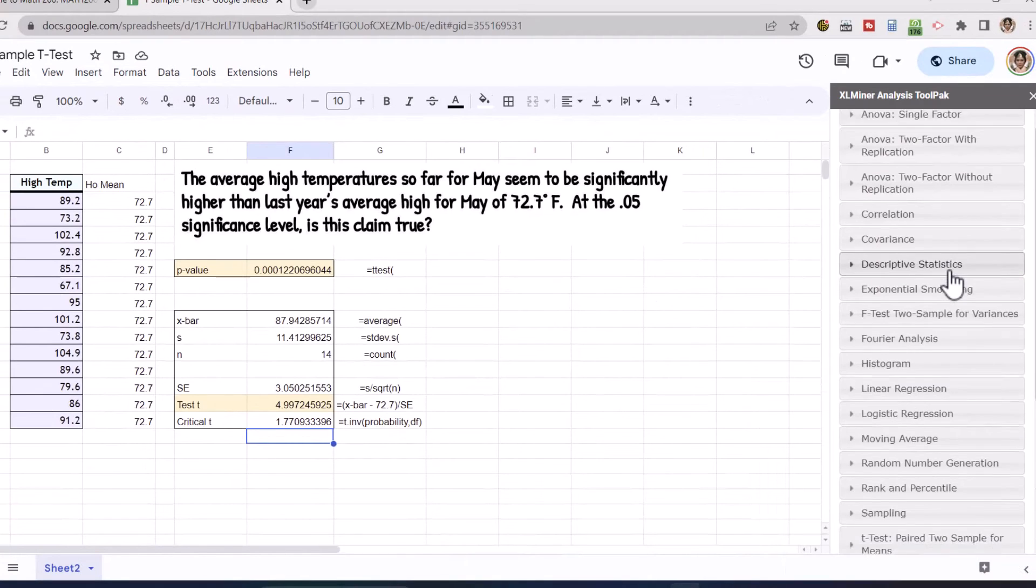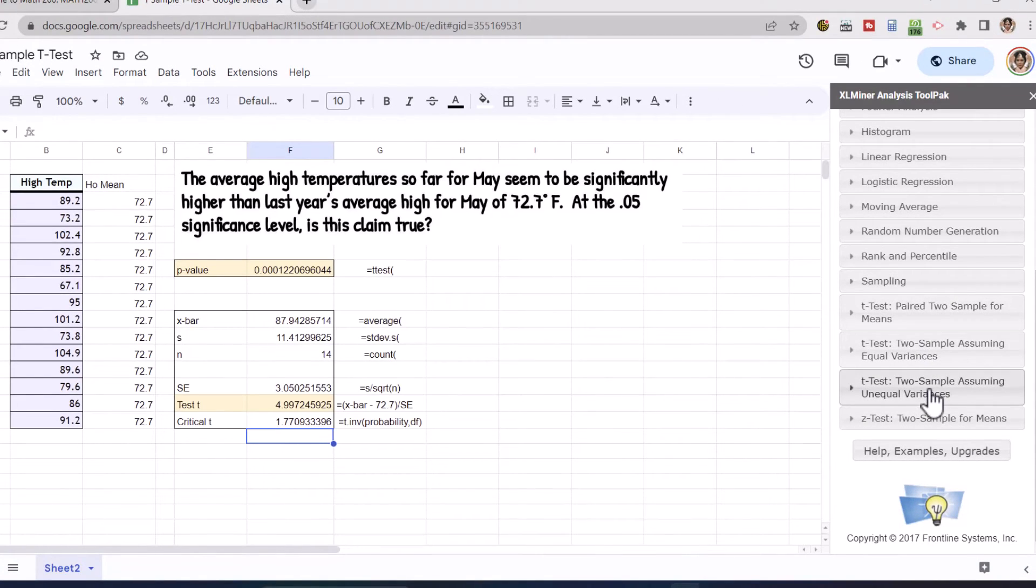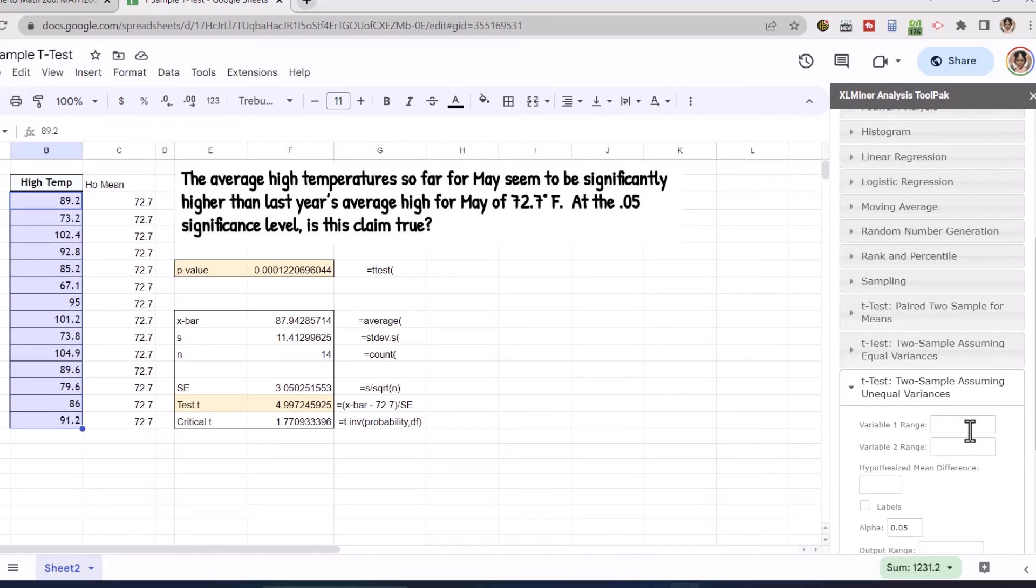Now I've got several different options. But again, I'm going to choose those unequal variances because I don't actually have a two sample test here. So I'm going to click on that t test. It wants to know where my variable one range is. I'm going to get rid of this F17. And I'm going to go ahead and click, drag and highlight through my data. And then I'm going to click on the variable one range cell.